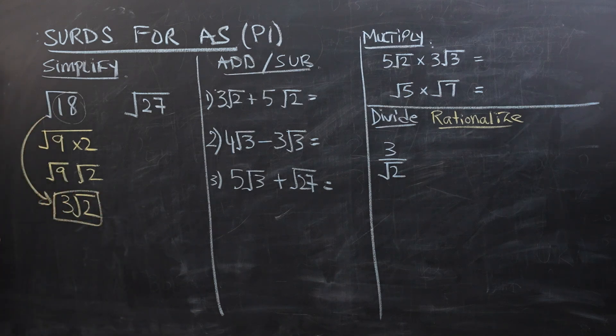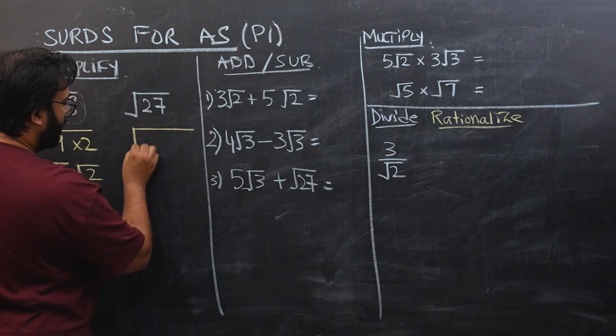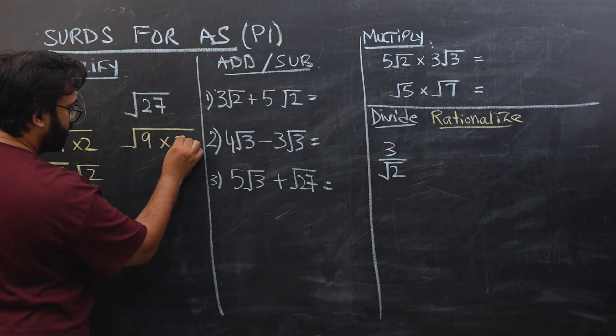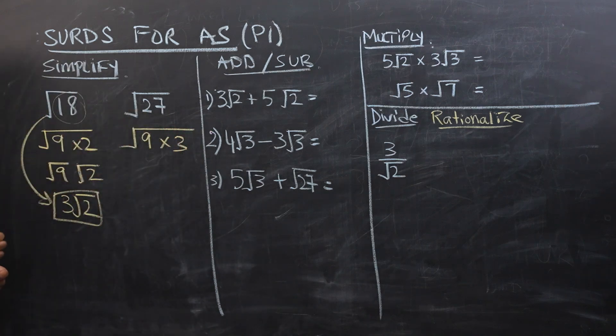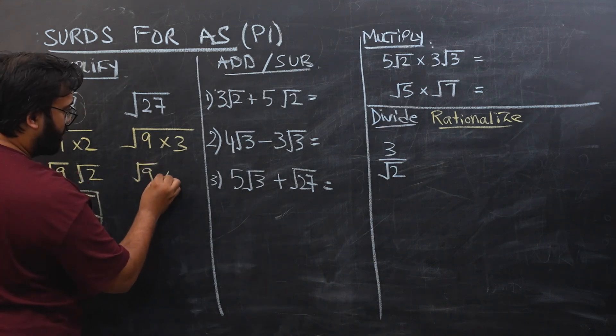For some of you guys, you might use calculators where if you put under root 18, it would automatically give you this value. Now for under root 27, again it would be 9 times 3, so you have to think of the biggest square factor of this number. So it would be under root 9 times under root 3.